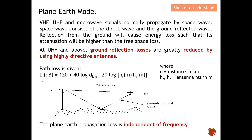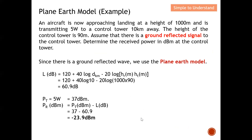This equation is for the plane earth model calculation. The variables are: distance between transmitter and receiver in kilometers, and the heights of the transmitter and receiver antennas. From this equation you can conclude that the plane earth path loss is independent of frequency, since no frequency term appears in the equation.